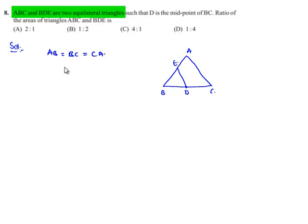So here as BDE is an equilateral triangle we can say BD is equal to BE is equal to DE. And as D is the midpoint of BC, we can say BD is equal to half times BC.